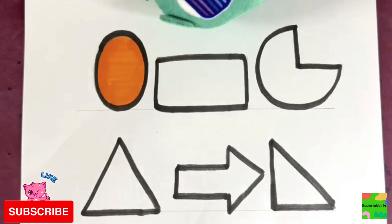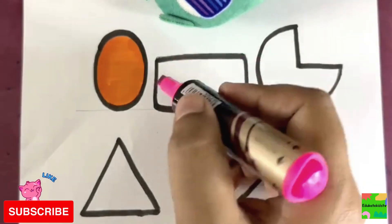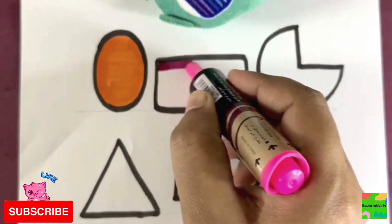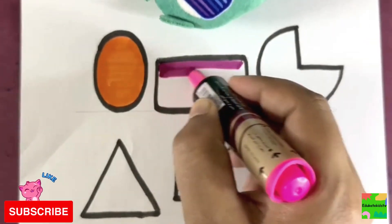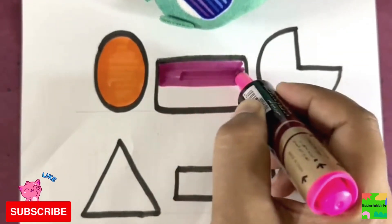Oval is of orange color. Pink - I will color this rectangle with pink color. Hooray! Yay!